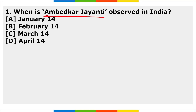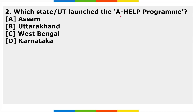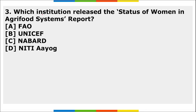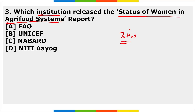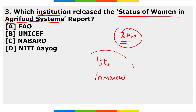Now for your homework: First, when is Ambedkar Jayanti observed? Second, which state launched a help program? Third, which institution released the 'Status of Women in Agri-Food Systems' report? These are your three homework questions. Please like the video and comment below to let us know your views.